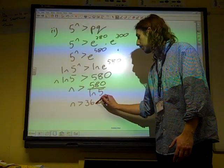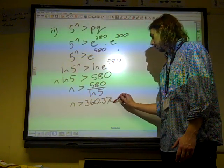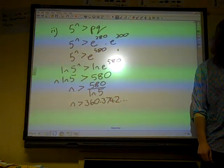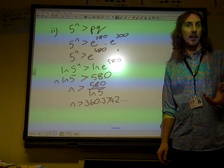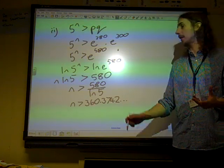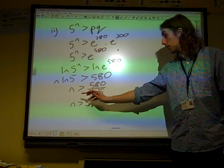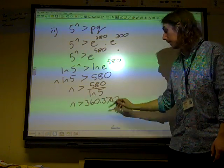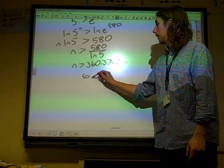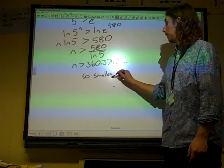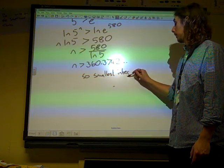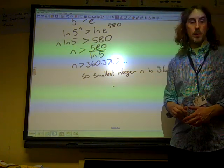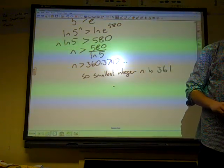But the question said, find the smallest integer N that satisfies this inequality. So if N is greater than that, the smallest integer that it could possibly be must be 361, the smallest integer greater than that. And that's it.